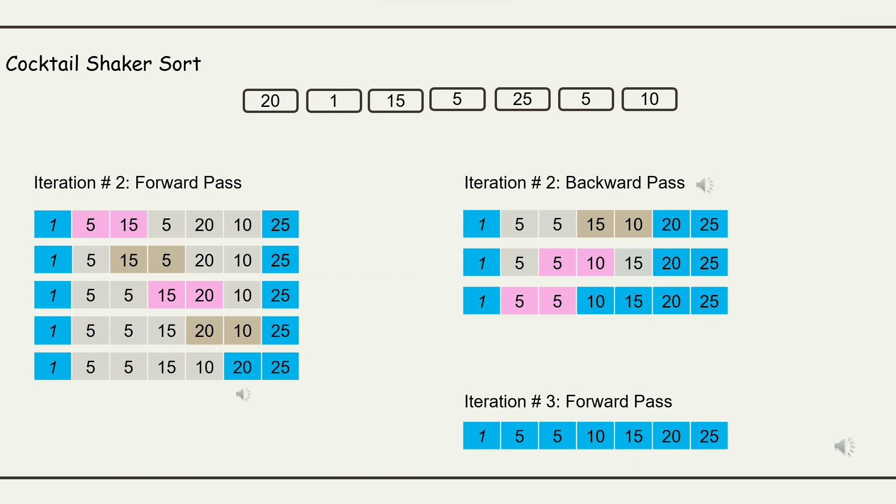Next is the second iteration backward pass. Since we already placed the second highest value, we need to move to the second adjacent element. Compare 10 and 15. Since 15 is greater than 10, they need to swap. Compare 10 and 5. Since 5 is less than 10, no need to swap. For the second iteration, we have the completed elements, which are 1, 5, 5, 10, 15, 20, and 25. For the third iteration of forward pass, we need to check if they have unsorted elements. Since it's sorted, the algorithm will stop.